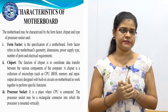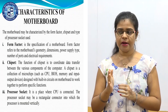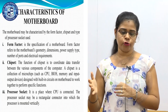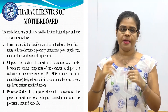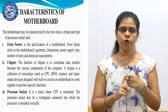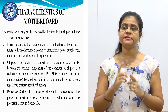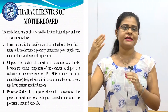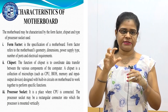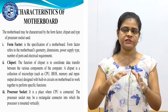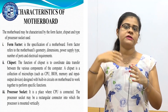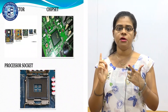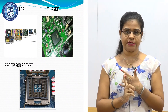The second characteristic is the chipset. The function of the chipset is to coordinate data transfer between various components of a computer. The third characteristic is the processor socket — it is a place on the motherboard where the CPU is connected. So the three characteristics of the motherboard are form factor, chipset, and processor socket.